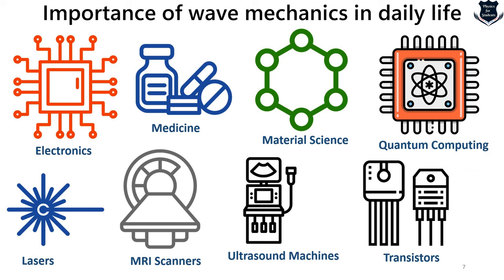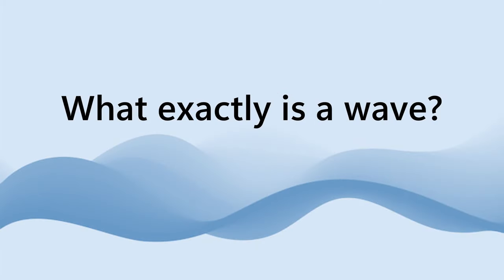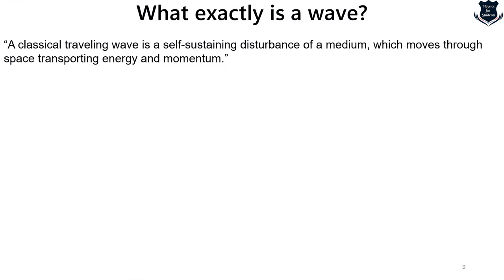Having understood what waves are and why we need to study them, it is now time to understand what exactly a wave is. A classical travelling wave is a self-sustaining disturbance of a medium which moves through space, transporting energy and momentum. What is important is the word 'disturbance,' as this is central to the wave definition.